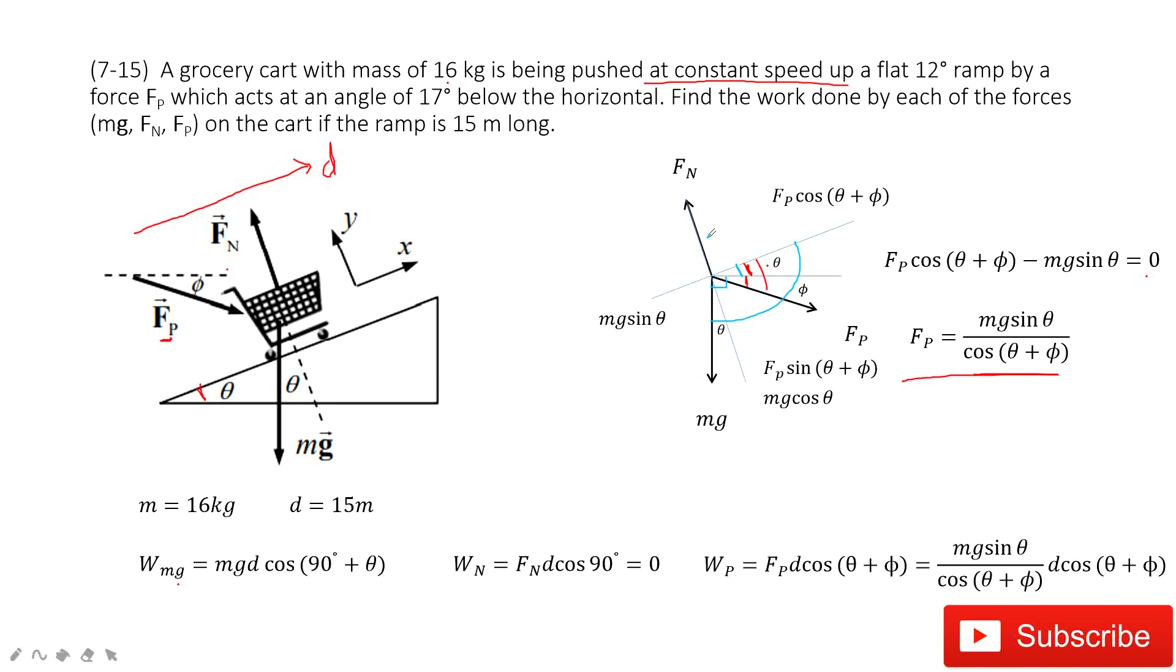Next, find the work by the normal force. So it becomes Fn times d times cos 90 degrees. Because this angle is 90 degrees. Cos 90 degrees is zero, so the work by the normal force is zero.